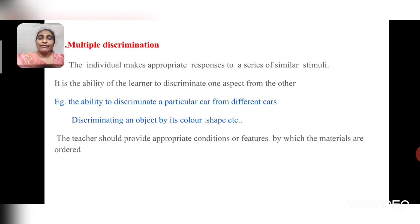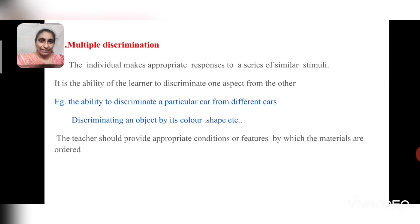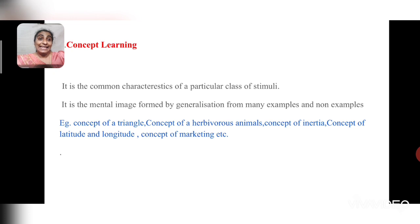In the classroom, to bring the child to this level, provide appropriate conditions or features by which materials are ordered. If a child has to identify a triangle from a set of shapes, give him the features of a triangle — that it is three-sided. Through this, he comes to a conclusion and attains the next level: concept learning.